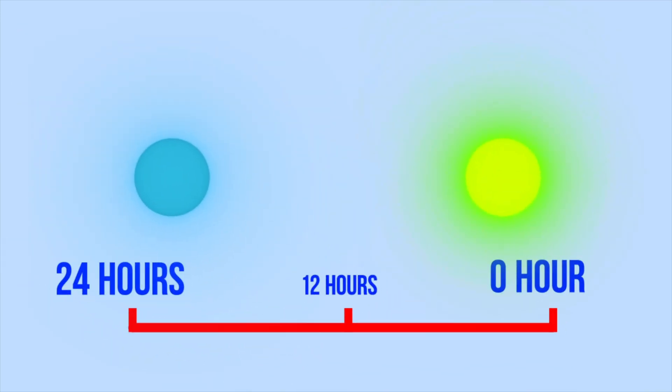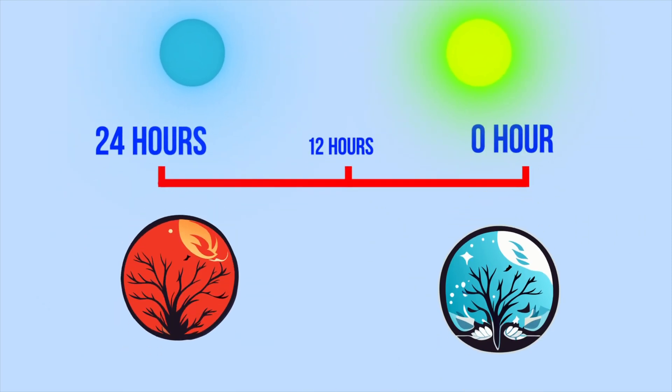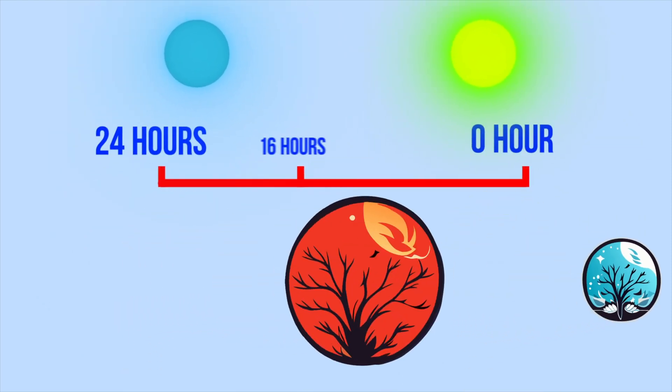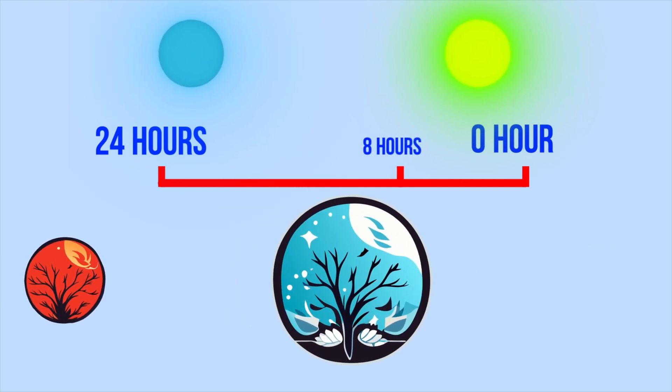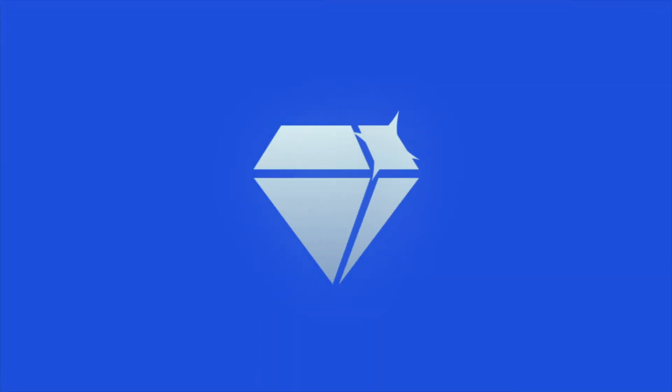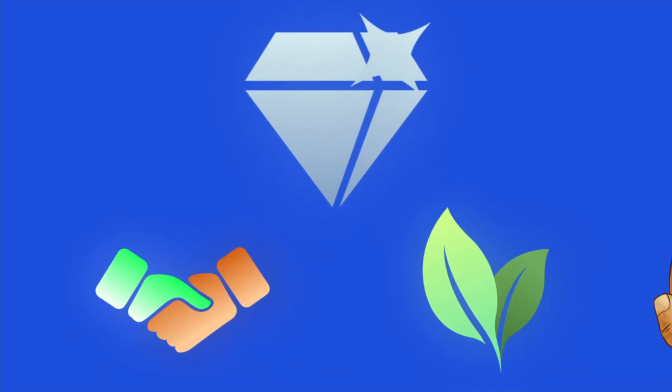However, this division depended on the length of daylight, meaning that the duration of hours varied with the seasons. In summer, daylight hours were longer, while in winter they were shorter. Nonetheless, this system proved useful for organizing daily activities such as trade, agriculture, and religious celebrations.